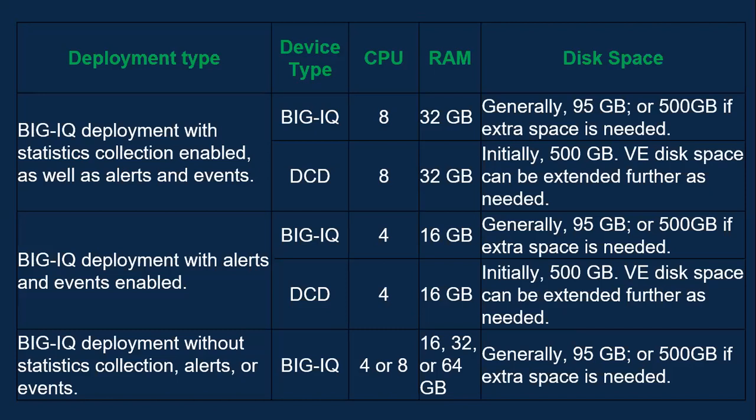If you want a BigIQ deployment with only alerts and events enabled, you can start with 4 vCPU and RAM as 16 GB. As a general practice, start with 95 GB of disk space, or set it to 500 GB if sufficient space is available. If you don't need statistics or alerts, you can go with only BigIQ and no DCDs, using 4 or 8 CPUs with RAM as per your requirement. With this, we have covered the overall deployment options available with BigIQ.